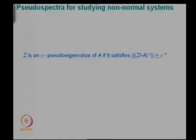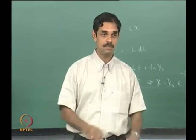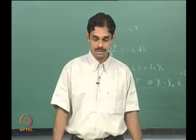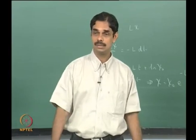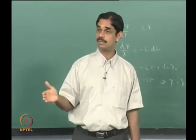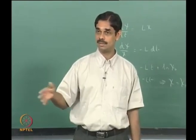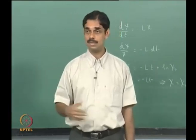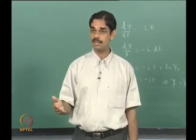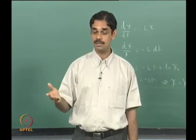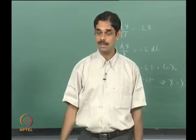So z is an epsilon pseudo-eigenvalue of A if it satisfies: the norm of (zI minus A) inverse is greater than epsilon to the power minus 1, or equivalently the norm of (zI minus A) is less than epsilon. That means you are not looking to satisfy the relation exactly, but within some small number epsilon you satisfy the relationship. If you were looking at a resonance phenomenon, your amplification goes like the inverse of the distance between the forcing frequency and the resonance frequency — a 1-over-distance kind of relationship.